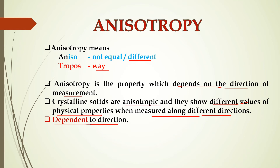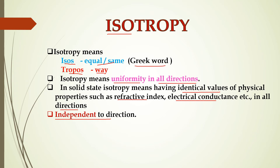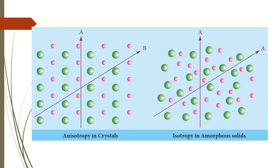Crystalline solids are anisotropic. Looking at the diagram to explain anisotropy and isotropy — crystalline solids have a regular, repeating unit with an orderly arrangement. You can see a first green color atom, then pink color, then green, then pink — repeated in an orderly arrangement.